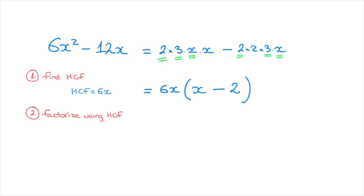And we're done. We've just written 6x squared minus 12x in its fully factored form — that is 6x times, in parentheses, x minus 2. If we wanted to check, all we would have to do is distribute this 6x across the parentheses, and we'd fall back on the original expression 6x squared minus 12x, confirming this is correct. That's how we write simple expressions in their fully factored form using the highest common factor, and that's it for this tutorial.